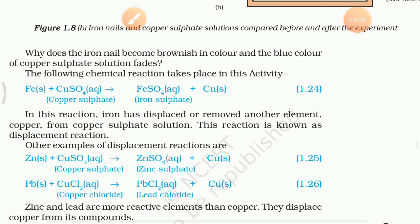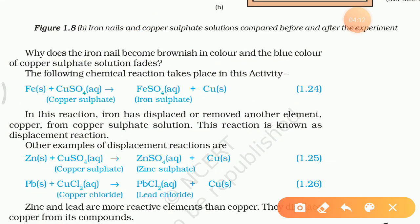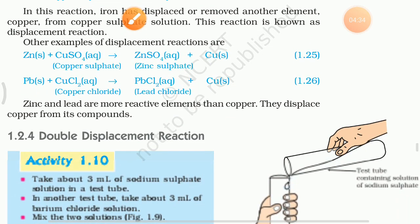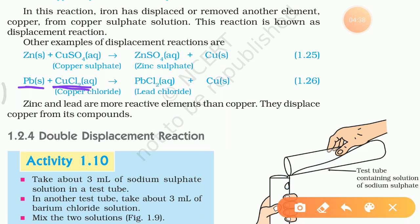Some other examples of displacement reactions are zinc plus copper sulphate. Zinc is also more reactive than copper, so it will displace the copper from its salt and forms zinc sulphate and copper. Another example is lead and copper chloride. If we react lead with copper chloride, we will get lead chloride because lead is more reactive than copper. So zinc and lead are more reactive elements than copper, and that's why they displace copper from its compounds. Now it is clear what a displacement reaction is — a more reactive metal displaces a less reactive metal from its compound.